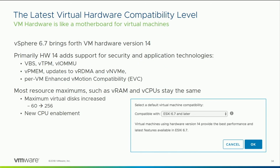The latest version of hardware is 14, shipped with 6.7. We didn't really bump up too many of the maximums in that release, but we did enable a lot of new hardware innovations such as TPM 2.0, support for VBS (Windows virtualization-based security), enhanced vMotion compatibility, and others. If you need any of those new capabilities in vSphere 6.7, make sure you're running hardware version 14 — don't set your virtual hardware to an older default or you won't have access to those new technologies.